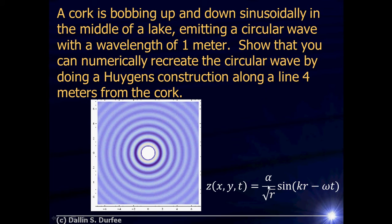Notice that our wave's amplitude drops as the square root of R. Why is that? Well, in three dimensions, if I have a spherical wave, we think about the power coming from the source as it spreads out over bigger and bigger spheres. The surface area of a sphere goes as the radius squared, so the intensity goes down as one over R squared. Since intensity is proportional to amplitude squared, the amplitude is proportional to one over R.